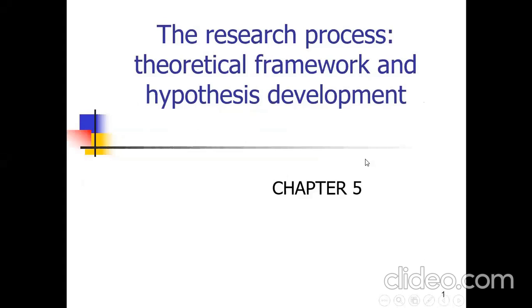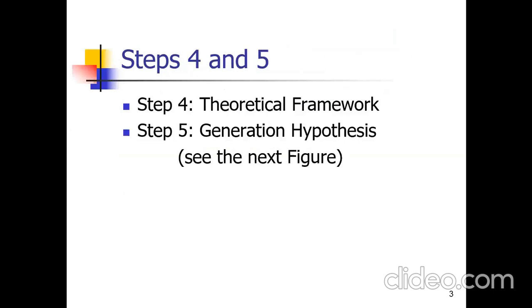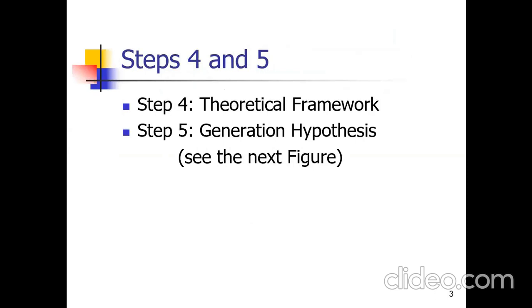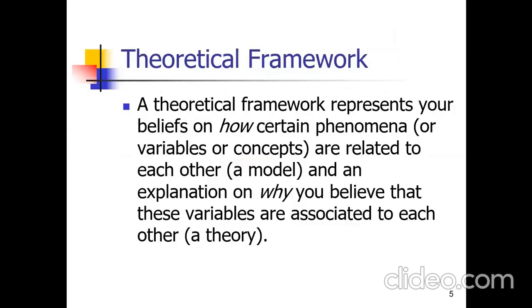We will discuss types of variables. When we read a research paper in business research, we encounter variables such as dependent variable, independent variable, mediating variable, moderator variable, and control variables. These are the objectives of the chapter. We will focus on the critical framework and hypothesis generation.